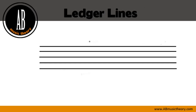Here's a ledger line note above the staff, and here's one below. In grade 1 music theory, you only need to identify and draw a ledger line one below the treble clef staff and one above the bass clef staff.